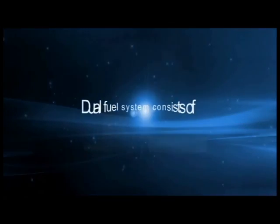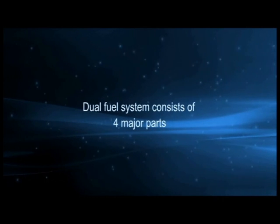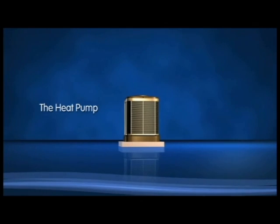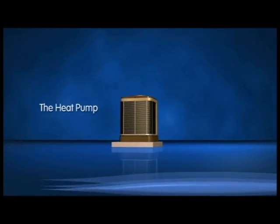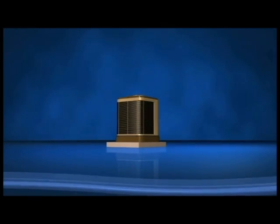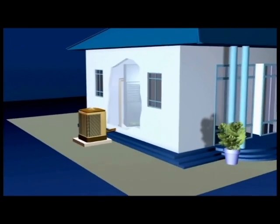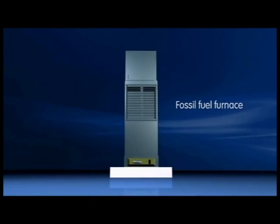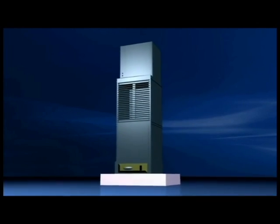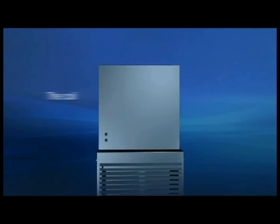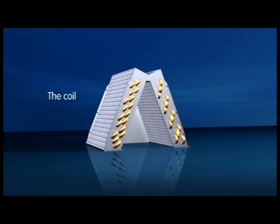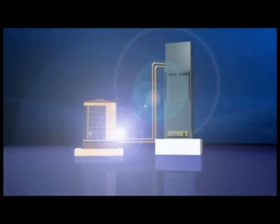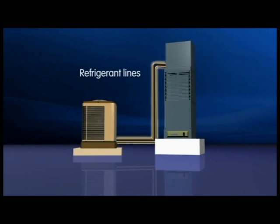The dual fuel system consists of four major parts. The heat pump itself is located outdoors and runs on electricity. A fossil fuel furnace located inside the home. The coil, which is located above the furnace. And refrigerant lines, which connect the heat pump to the coil.